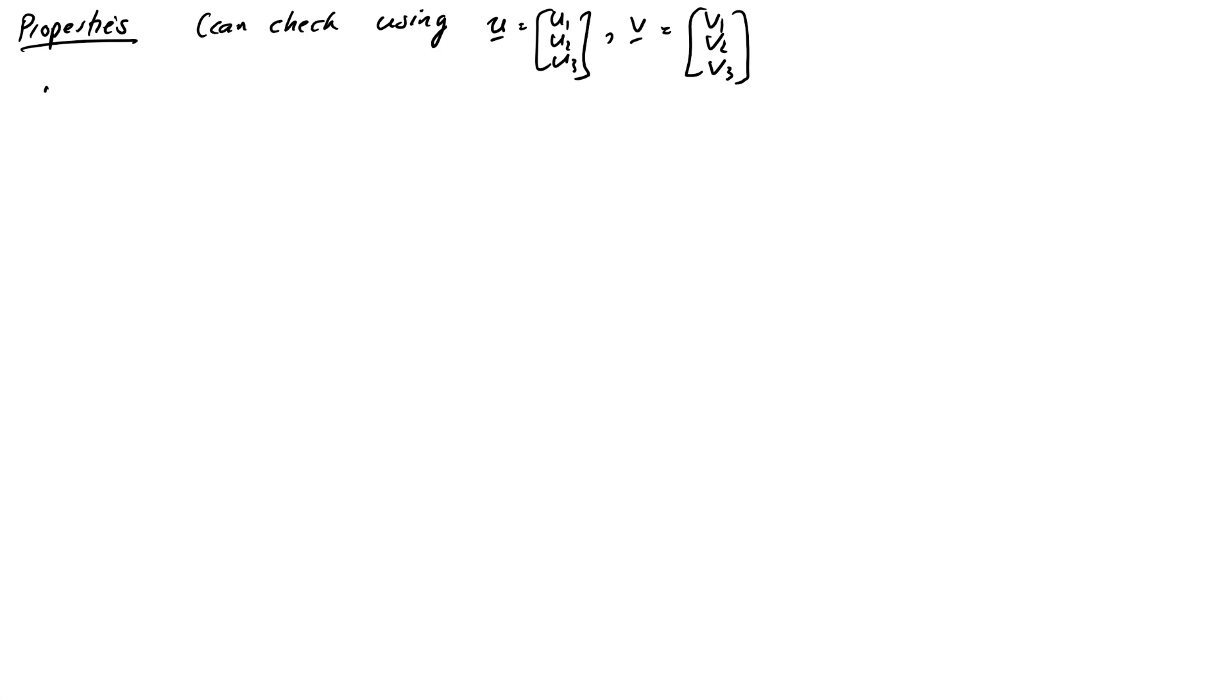And you can do some things like calculate first property is that u × v is negative v × u. So that's interesting. With the cross product, it matters which way around we do it. If we do it the wrong way around, we'll get the negative of the answer. So this is the first time we meet a product where the order is actually really important. With all of our other products, our normal multiplication and our dot product, it hasn't mattered at all. But now it does, and this isn't going to be the first time we come across a product like this.